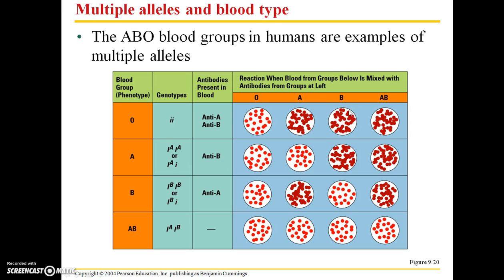Similarly, if you were to add the antibody serum with type B to your own blood, you're going to get a reaction. And if you add B, you're also going to get a reaction. So if you have type O blood, the only other blood type that you are compatible with is type O, because you cannot produce those carbohydrates.